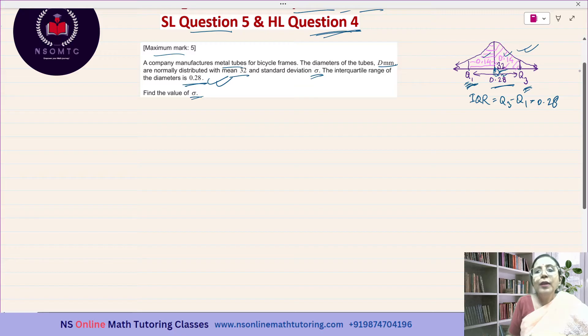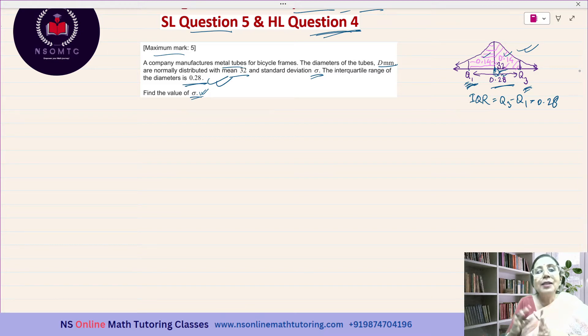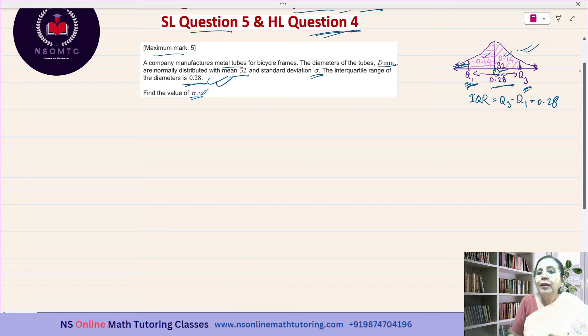Let us find the value of Q1. We know whenever the standard deviation is not known or the mean is not known, we have to go for the standardized normal distribution variable, the z distribution. This portion is having the probability of 0.25. So I can write that P of z, where z is a normal distribution variable with mean 0 and standard deviation 1, P(z ≤ z1) = 0.25.